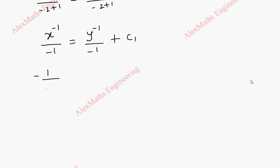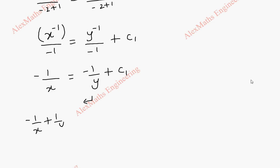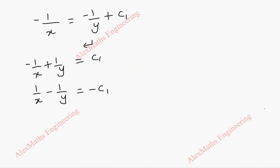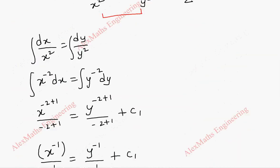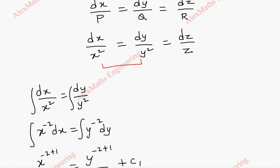This gives x power minus 1 by minus 1 equal to y power minus 1 by minus 1 plus c1, which is minus 1 by x equal to minus 1 by y plus c1. Rearranging, minus 1 by x plus 1 by y equal to c1. Changing signs throughout we get 1 by x minus 1 by y equal to minus c1, so this is our u: u equals 1 by x minus 1 by y.